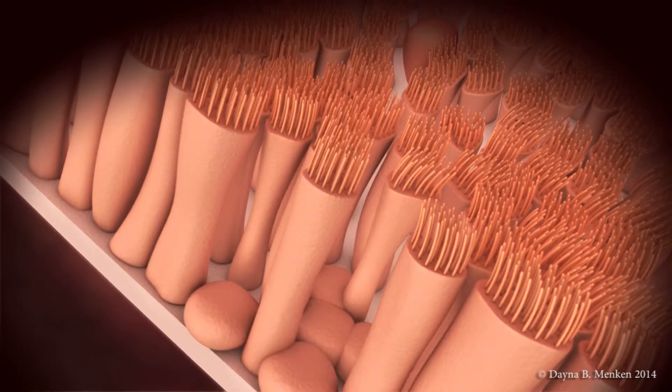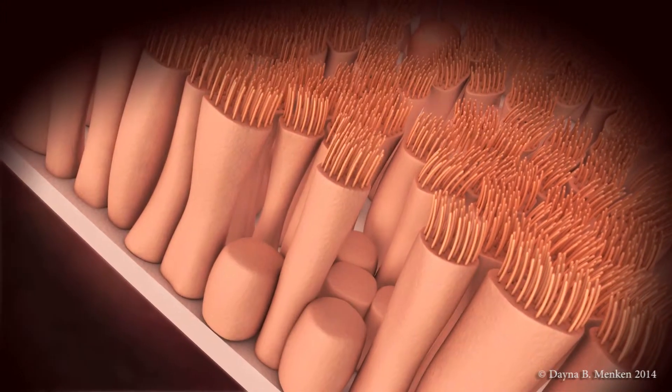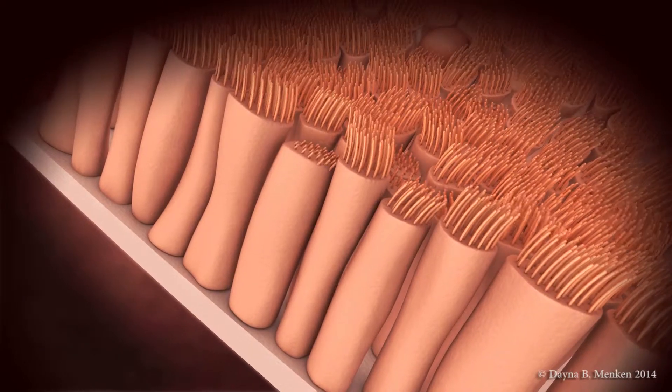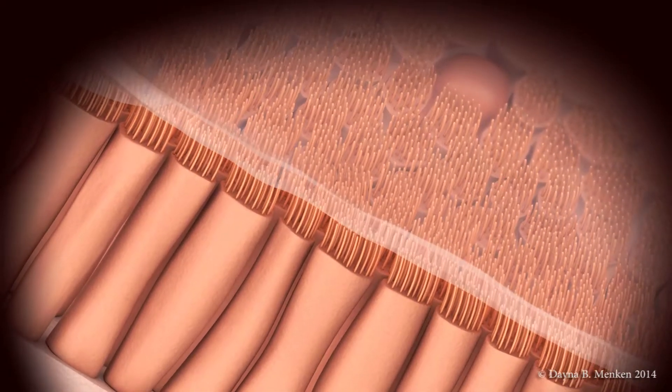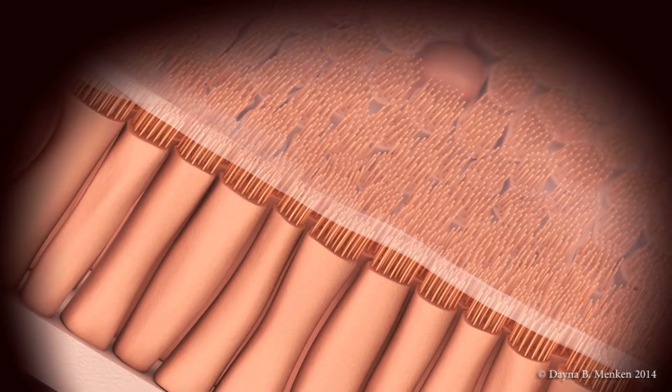New cells called progenitor cells then come in, which are able to form into the epithelial cells of the airways and lungs. When these new cells are fully formed, your lungs will regain the ability to function properly.